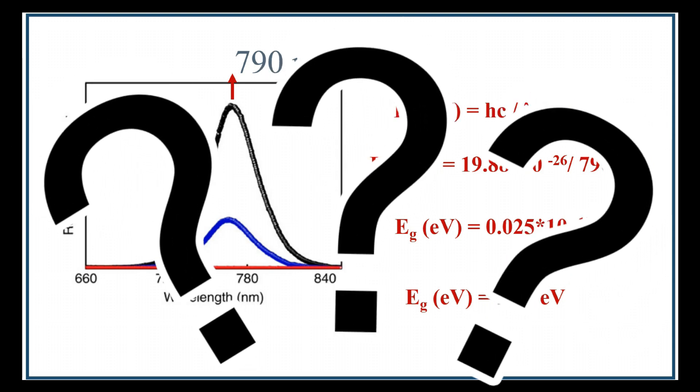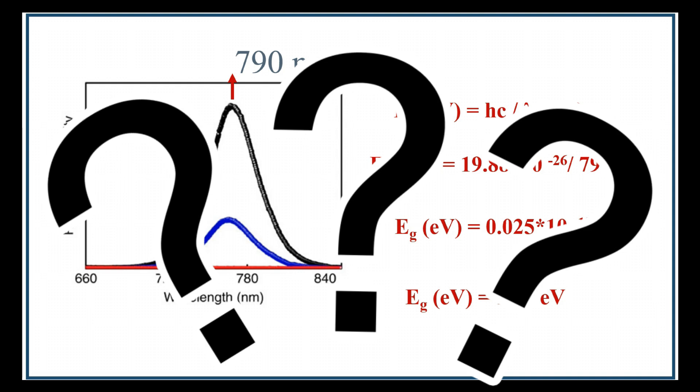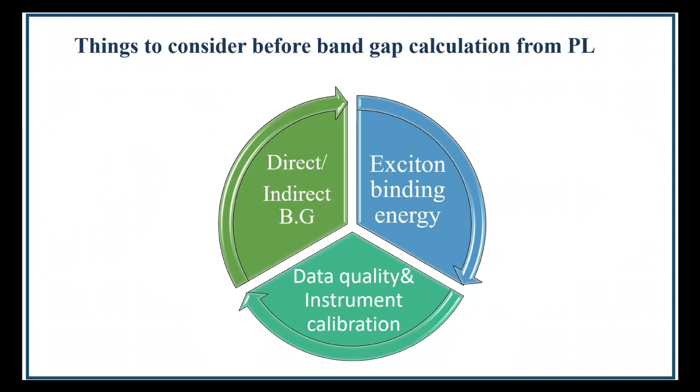Is this method always correct? We can check what things we need to consider before calculating bandgap from PL. First one is direct or indirect bandgap. Depending on the material, the PL peak may correspond to either a direct or indirect bandgap transition. If the material has a direct bandgap, the PL peak directly reflects the bandgap energy. However, for indirect bandgaps, additional calculations might be needed to account for phonon involvement in the transition.